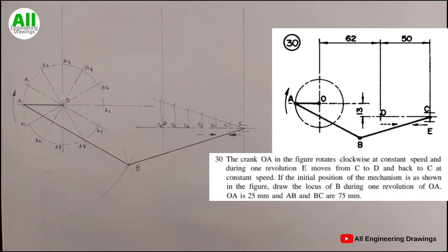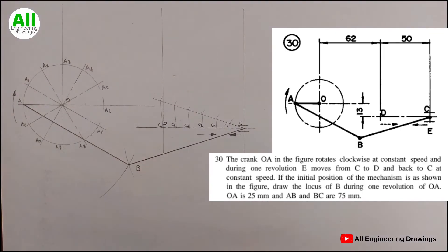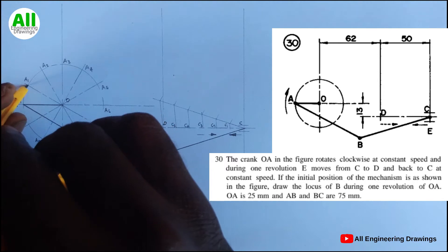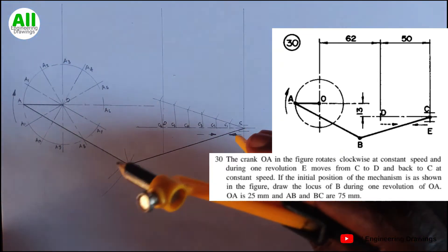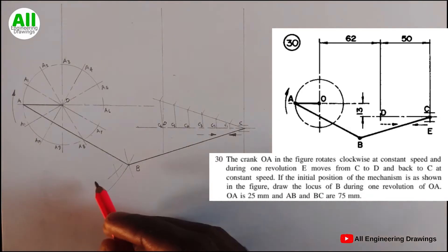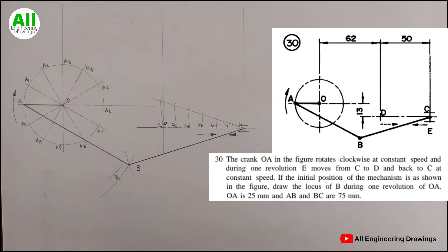The reason I divide the line into six equal parts is because I divided the circle into 12 equal parts, and six is half of 12. Now, using a radius of 75 mm — the same radius I used to draw the initial line — I will place the compass on point A1, cut an arc, then place the compass on point C1 and cut an arc to intersect the previous arc. The point where the arcs intersect I will call B1. I will repeat the same procedure for points A2 down to A11.